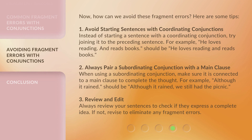Now, how can we avoid these fragment errors? Here are some tips. 1. Avoid starting sentences with coordinating conjunctions. Instead of starting a sentence with a coordinating conjunction, try joining it to the preceding sentence. For example, 'He loves reading. And reads books.' should be 'He loves reading and reads books.'